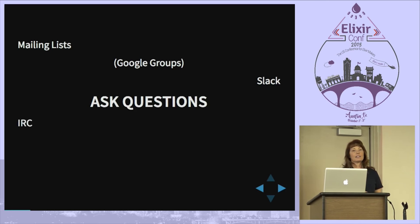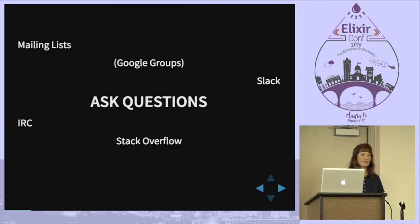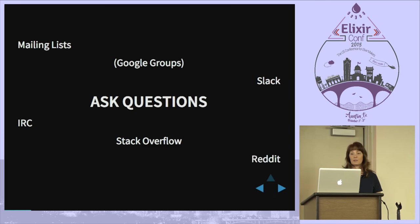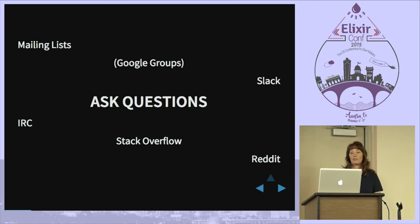Now we also have Slack and IRC. Stack Overflow is where a lot of answers come from. There's something on Reddit. There's Code Wall. There are all these places you can ask questions, so it does get pretty scattered. These are only the English language ones I'm vaguely aware of — I'm pretty sure it's duplicated in other languages.